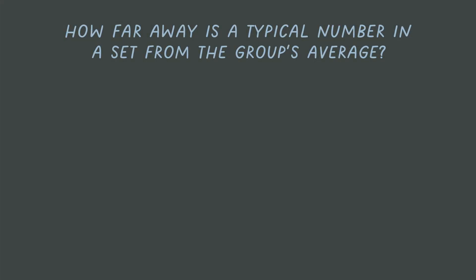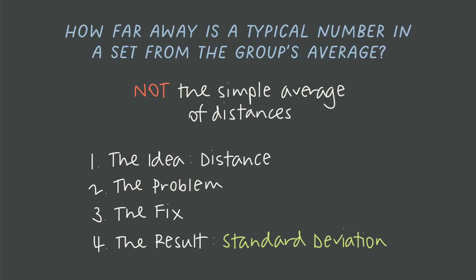In this video, we're not going to start with a scary formula. We're going to answer a simple question. On average, how far away is a typical number in a set from the group's average? That's the whole idea. We'll build a number that behaves like a typical distance. It isn't a simple average of distances, but it tracks spread in a way that's mathematically powerful. We're going to build the answer, the formula, step by step, starting with distance, identifying the problem with just looking at distance, fixing that problem, and then arriving at our result, which is going to be standard deviation.